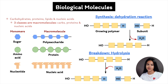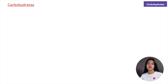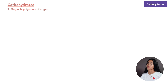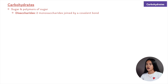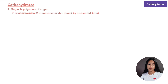Let's start with carbohydrates, which provide a source of energy and make up the cell wall in bacteria, algae, and plants. Carbohydrates include sugars and polymers of sugar. The simplest carbohydrates are the simple sugars or monosaccharides — the building blocks from which more complex carbohydrates are built. Disaccharides are double sugars — two monosaccharides joined by a covalent bond — and carbohydrate macromolecules are polymers called polysaccharides.